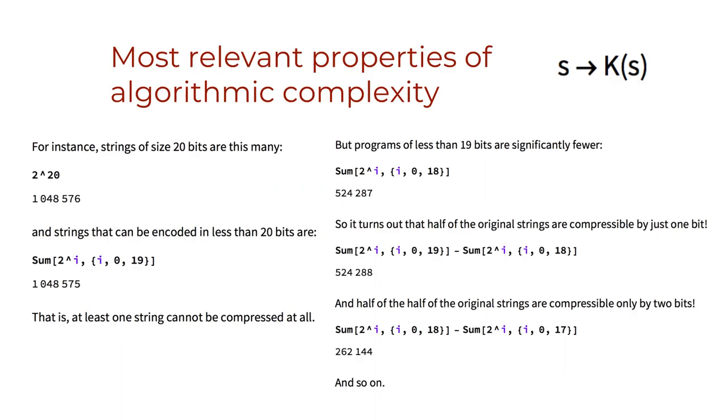For instance, strings of size 20 bits are this many and strings that can be encoded in less than 20 bits are this many. That is, at least one string cannot be compressed at all. But programs of less than 19 bits are significantly fewer. So it turns out that half of the original strings are compressible by just one bit and half of the half of the original strings are compressible only by two bits and so on. So most strings are close to the maximum complexity or maximum randomness because they are not compressible but for a few bits.